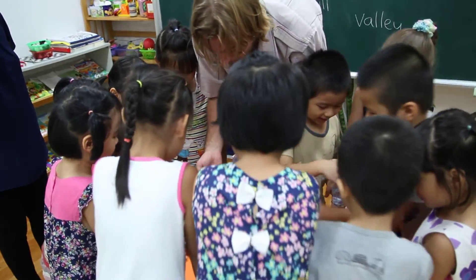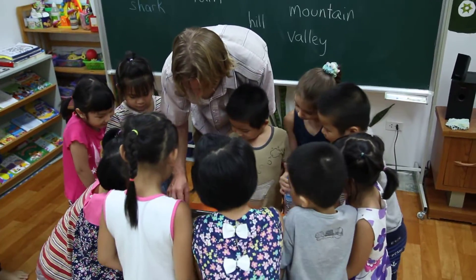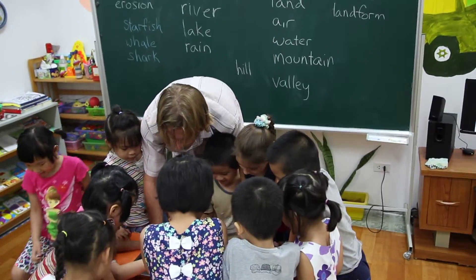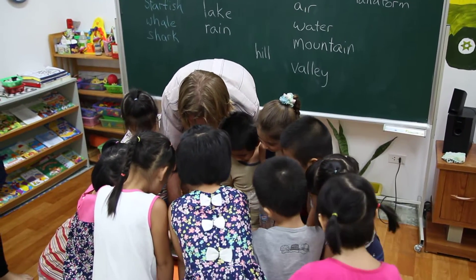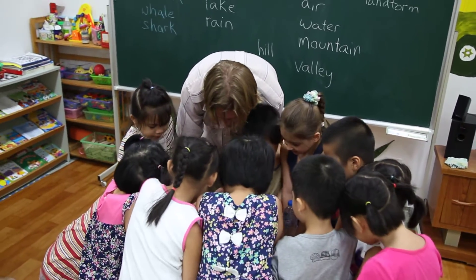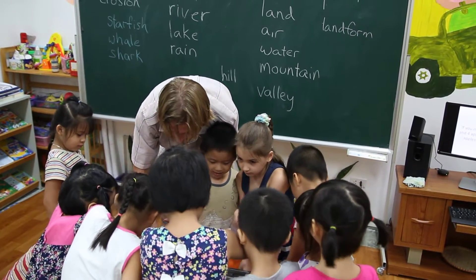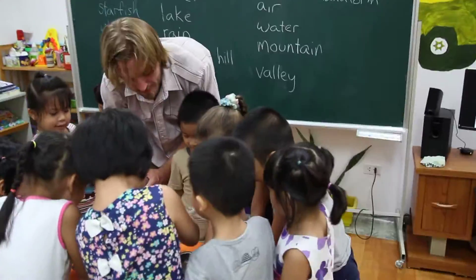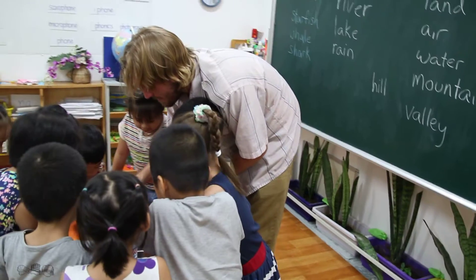Okay, so now what do we have? We are going to get all the land in the middle. What is this? Land. What do you call land in the middle of the ocean? This is an island. Everybody say island! Island! We've got an island in the middle of the ocean.